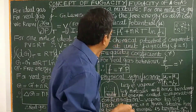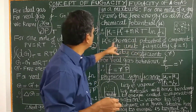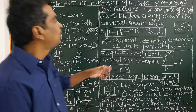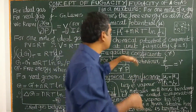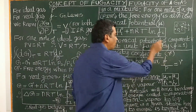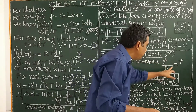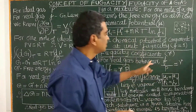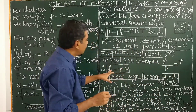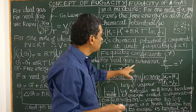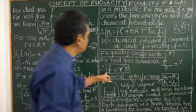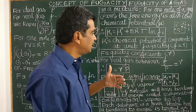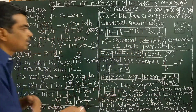Now, what is the fugacity coefficient? It is represented by the letter gamma. For a real gas, F/P = gamma, which is not equal to 1. For an ideal gas, F/P = 1. For a real gas, F/P = gamma. Therefore, F = gamma × P, where the fugacity of a gas is directly proportional to the pressure, and gamma = 1 for an ideal gas. So, the fugacity coefficient is defined as the ratio of fugacity to the pressure of a gaseous substance.